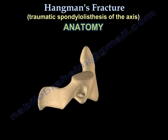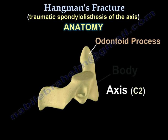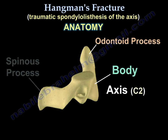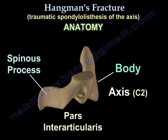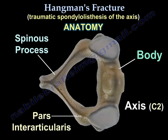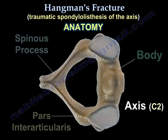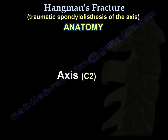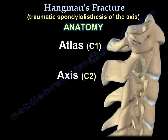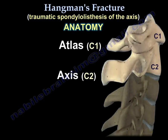Here is the anatomy of the C2 vertebra. It has the odontoid process, the body, the spinous process, and the pars interarticularis. C2 is called the axis, and C1 is called the atlas.